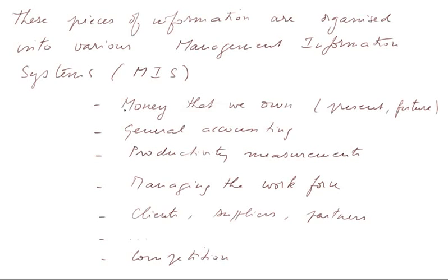One of them monitors the money that we own or will own, in the present and in the future. General Accounting is an MIS. Productivity measurements are recorded into another MIS. The management of the workforce is done via MIS. Managing clients, suppliers, partners like banks, and the authorities are also managed in MIS. And so is the competition.